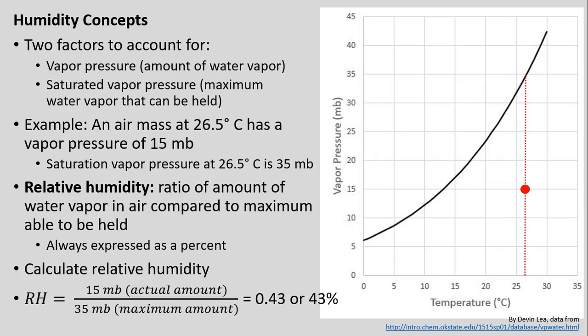Multiplying 0.43 by 100 gives us 43% relative humidity. Our air at 26.5°C with a vapor pressure of 15 millibars is at a little less than half — 43% — of its maximum capacity to hold water vapor, which is 35 millibars. Now if we change this so the vapor pressure increases all the way to 35 millibars, our saturation vapor pressure is also 35 millibars. Then 35 over 35 equals 1, or 100% relative humidity.